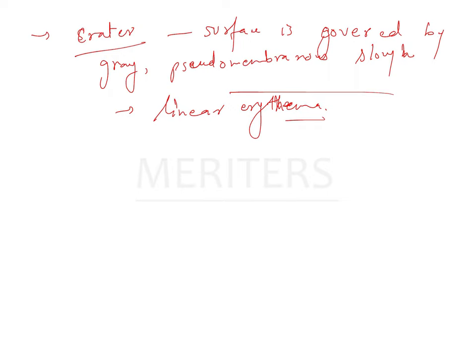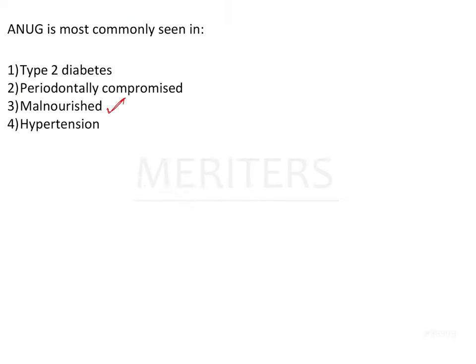To summarize, ANUG is characterized by a sudden onset of symptoms sometimes occurring after a debilitating disease, acute respiratory tract infection, poor nutrition, tobacco use, or psychological stress. In the question, type 2 diabetes, periodontally compromised, and hypertension are not the predisposing factors — malnourishment is. So the answer is option 3.